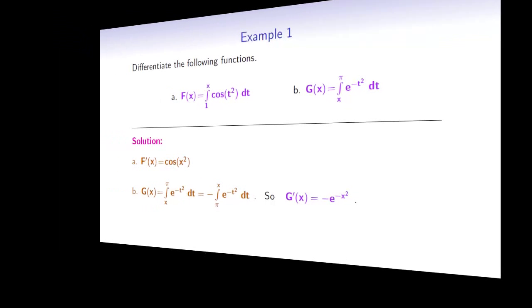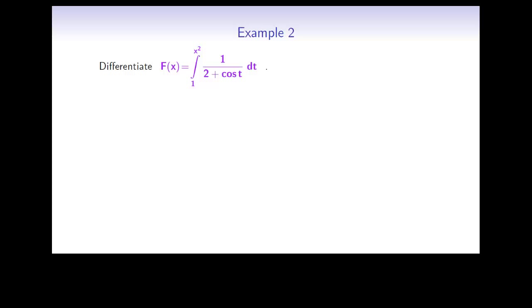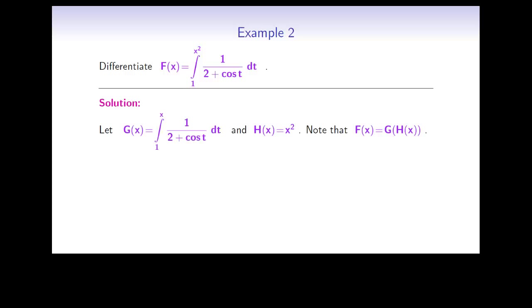Here's another example. Differentiate the function f defined as the integral from 1 to x² of 1 over (2 + cos t) dt. The lower bound is a constant, 1, and the upper bound is x², so we cannot apply the first part of the fundamental theorem directly. We can, however, let g of x be the integral from 1 to x of 1 over (2 + cos t) dt, and let h of x be x². Note that g is almost the same as f, and the composition g of h of x will be equal to f.